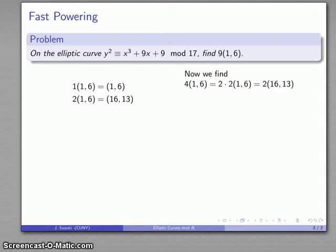I can continue the fast powering algorithm again if I want to find 4(1,6). It's the same as twice this, and so that's going to be twice (16,13). Again, it's the same point repeated, so I use the derivative to find the slope. I apply the elliptic curve addition formula and I find where that point is located.